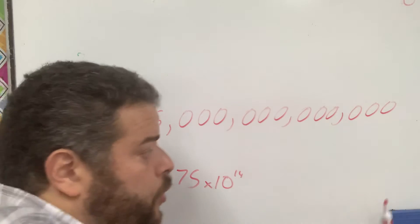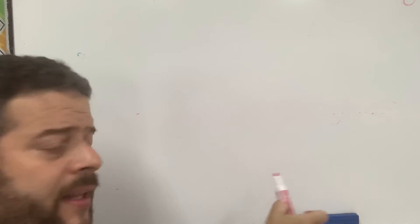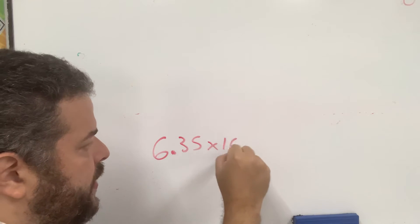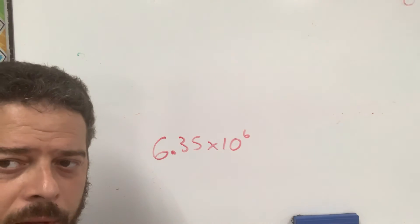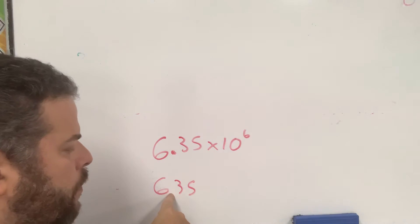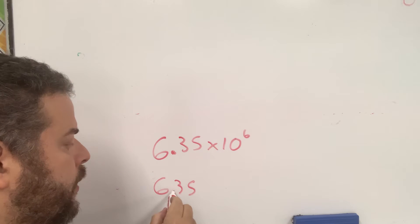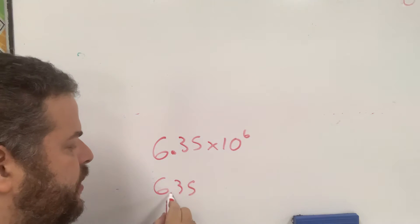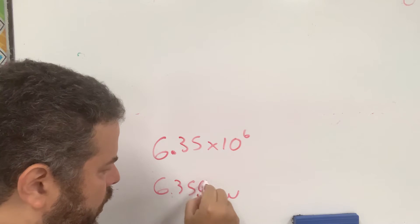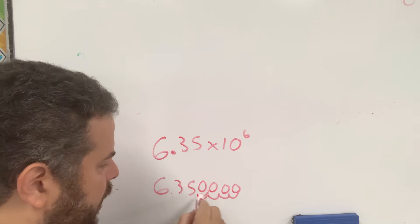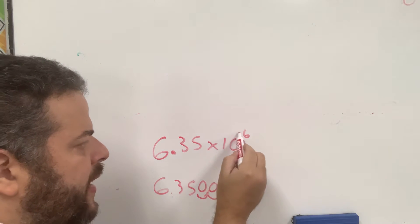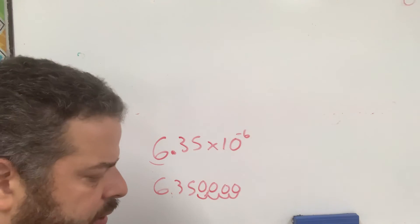If you ever want to expand a number, let's say they give you 6.35 times 10 to the 6. What you do is write 6.35, but don't put the decimal. From this point, you move 6 digits to the right: 1, 2, 3, 4, 5, 6. So you add that many zeros, and this number is equal to the expanded form. If it were negative, you run it to the left. Exactly the same.